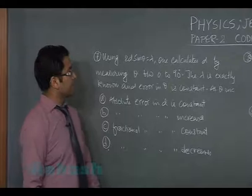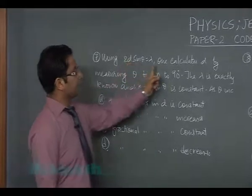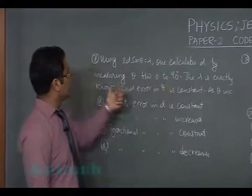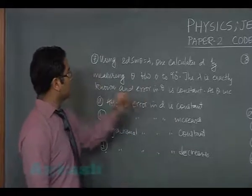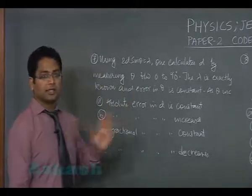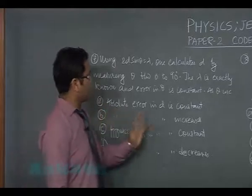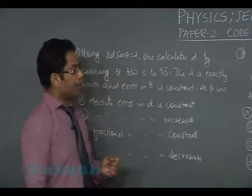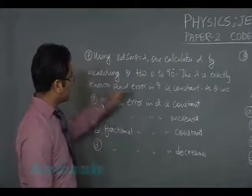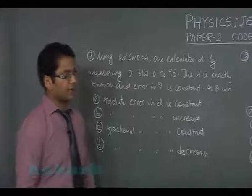Question number seven: Using 2d sin θ = λ, calculate d by measuring θ between 0 to 90 degrees. λ is exactly known, meaning there is no error in λ, and error in θ is constant. As we increase θ, we need to comment on absolute error and fractional error.